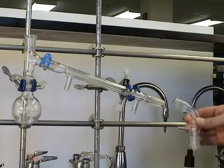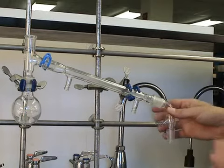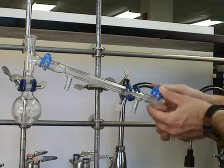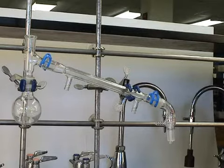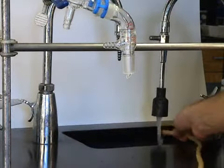We use a vacuum adapter as an elbow at the end of the condenser so that our distillate drips into our receiver. And that's attached again with another Keck clamp.